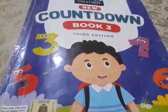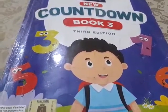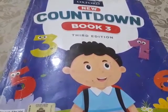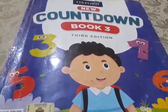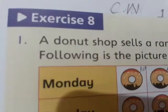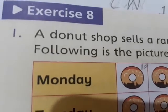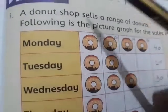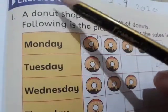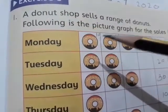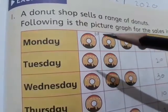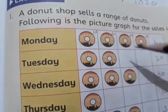Bismillahirrahmanirrahim. Assalamu alaikum warahmatullahi wabarakatuh. Welcome to our online math class for Grade 3, Umar Kura Public School, Bahawalpur. We are going to do the new Countdown Book 3, third edition. Our chapter is Handling Information, Exercise 8, page number 209. In our previous lecture we covered picture graphs, pictographs, and column graphs.